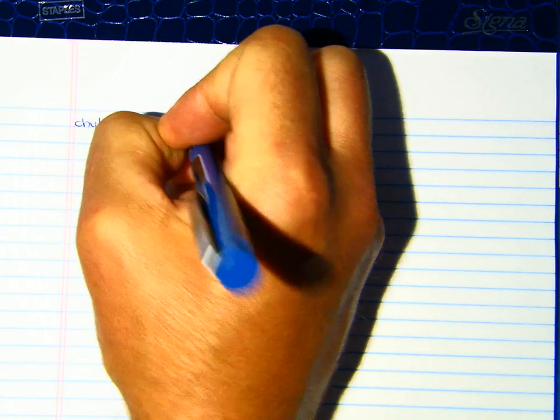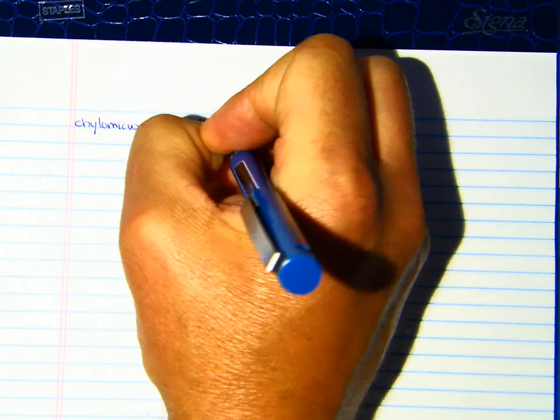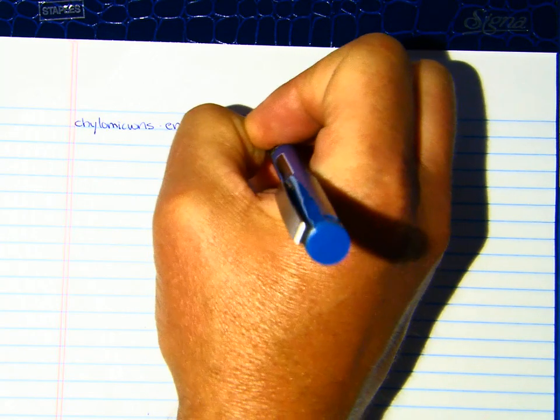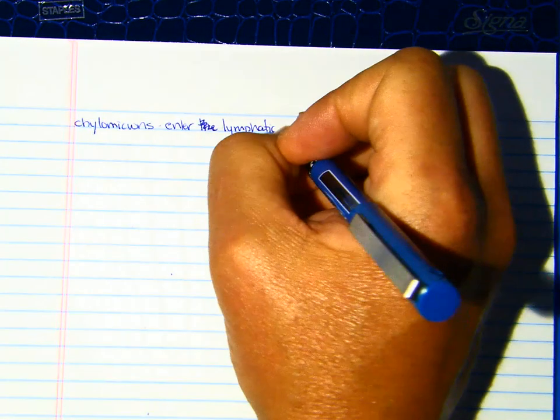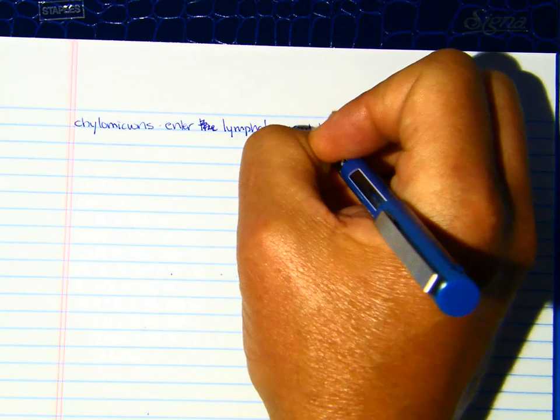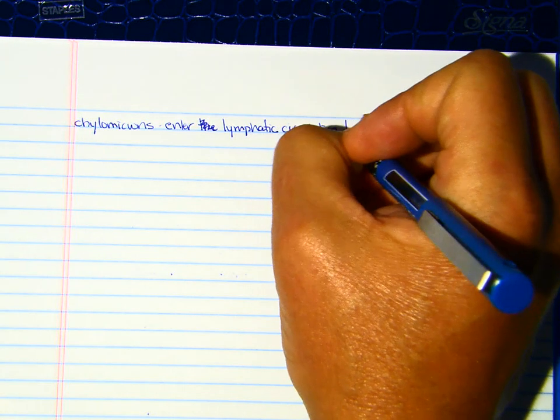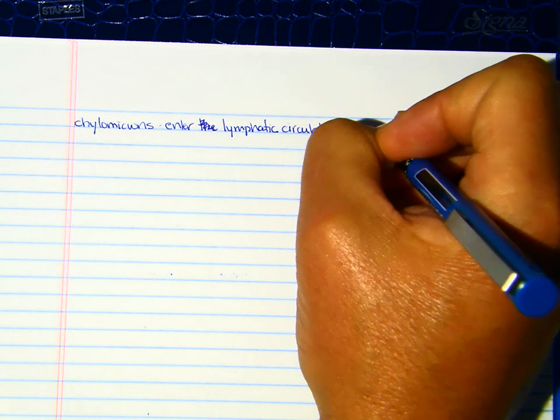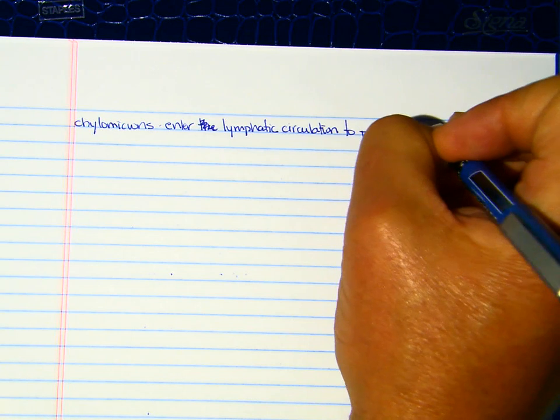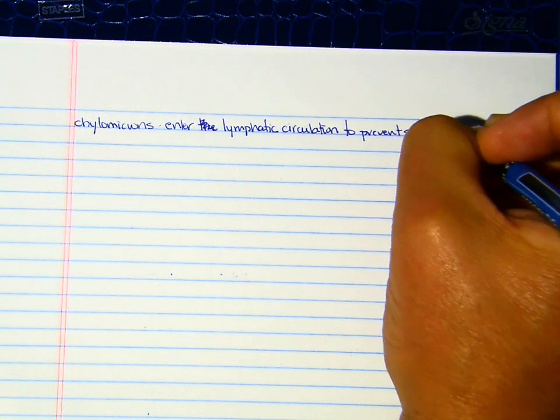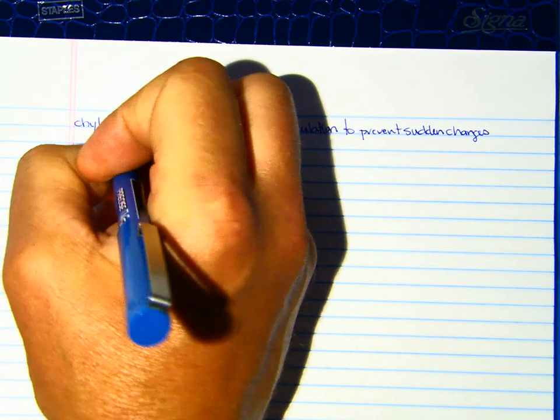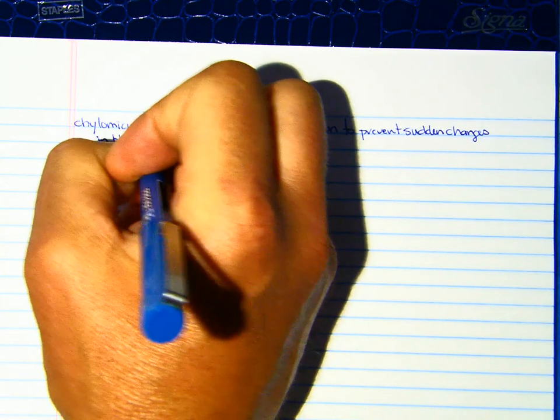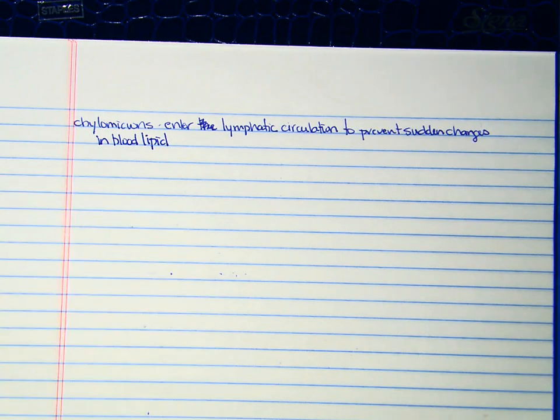Chylomicrons enter lymphatic circulation to prevent sudden changes in blood lipid content.